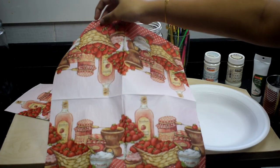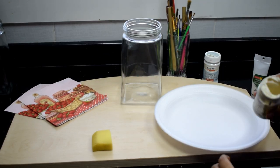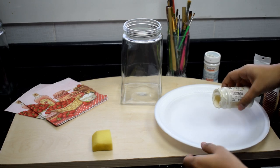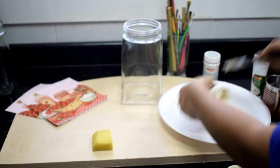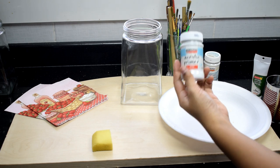Decoupage glue and varnish or mod podge. Mod podge works as glue and the varnish will protect your bottle from water. Acrylic paint, water, and paper plate.